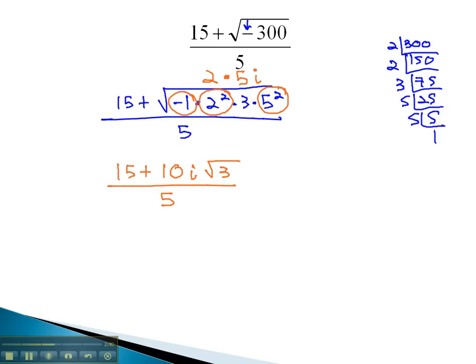Before we're allowed to reduce, we'll want to factor the numerator. There is a common factor of 5, leaving 3 plus 2i square root of 3, over 5. Now we can divide out the 5's, leaving our final answer, 3 plus 2i square root of 3.